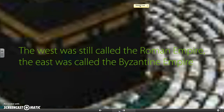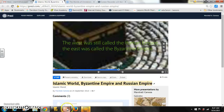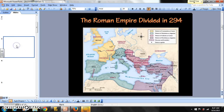You still have the Roman Empire in the west as Rome's population is declining, and you have the east as the Byzantine Empire. Here's a map of what this looks like in 294, after the end of the Pax Romana. The green area is the western Roman Empire, the purplish area is the eastern Roman Empire, and then you have the tribal Germanic groups in the north that are going to come in and collapse Rome upon itself.